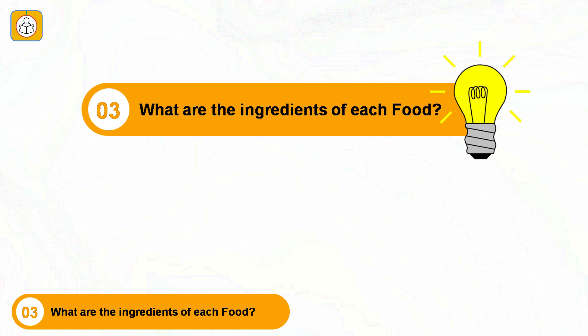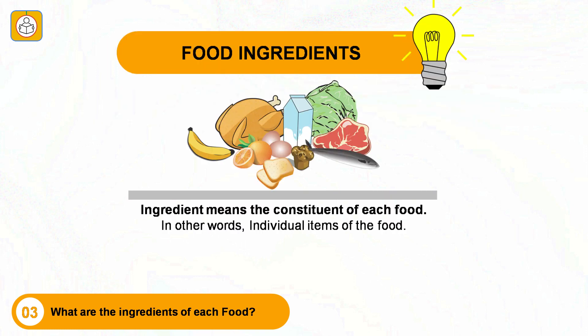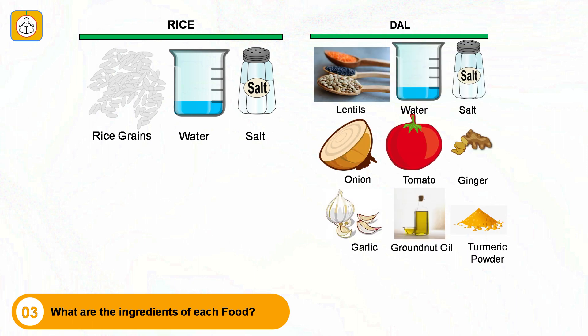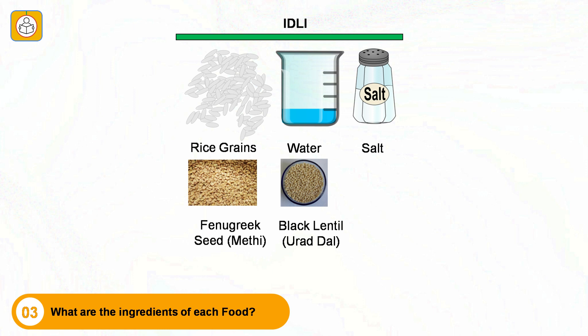What are the ingredients of each food? An ingredient means the constituent of each food, or in other words, the individual items of the food. Plain rice consists of rice grain, water and salt. Dal fry consists of lentils like masoor dal and toor dal, water, salt, onion, tomato, ginger, garlic, groundnut oil and turmeric powder. Idli consists of rice grain, water, salt, fenugreek (methi) and black lentils (urad dal).